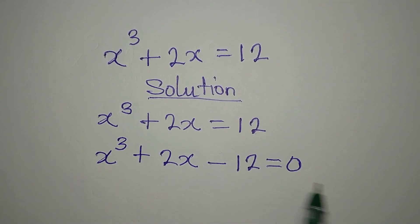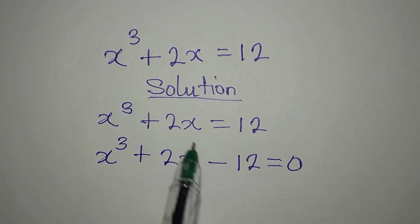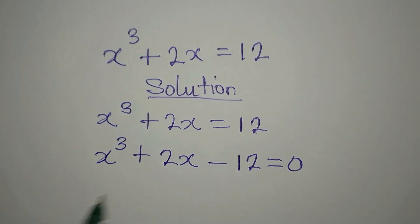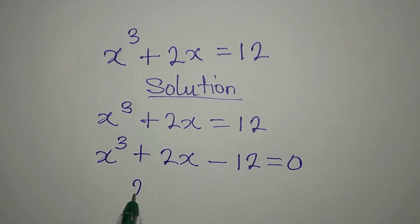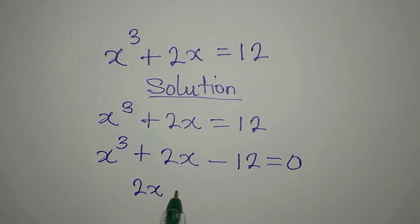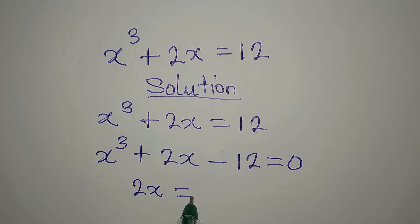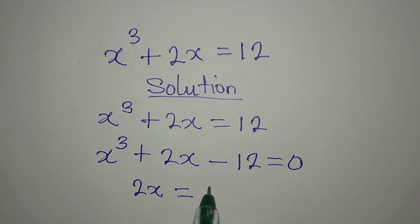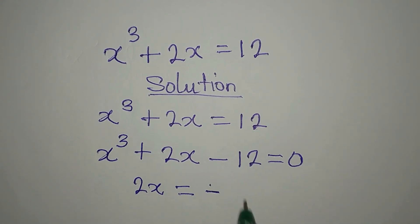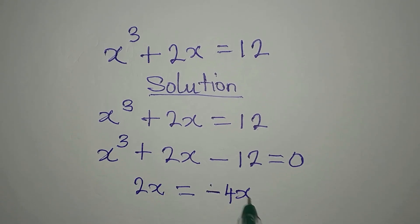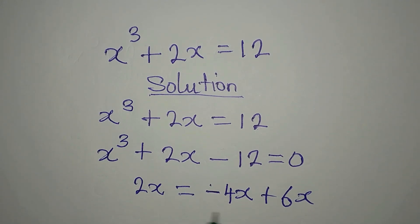If you look at these three terms, nothing is common to all three of them, so we need to split the middle term. This is 2x right in the middle, and it is going to be equal to minus 4x plus 6x — so 2x equals minus 4x plus 6x.